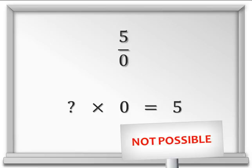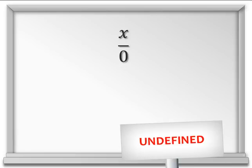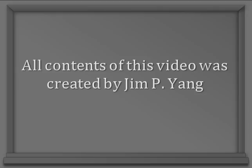So there is no number times 0 which would give us 5, or any number for that matter. So we conclude that any number over 0 is not possible, and therefore 0 in the denominator of a fraction is undefined.